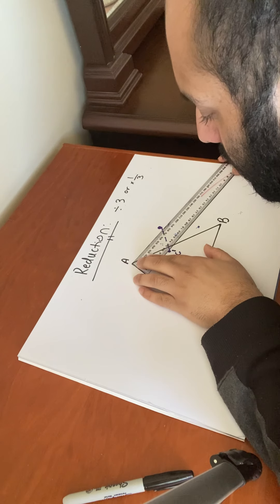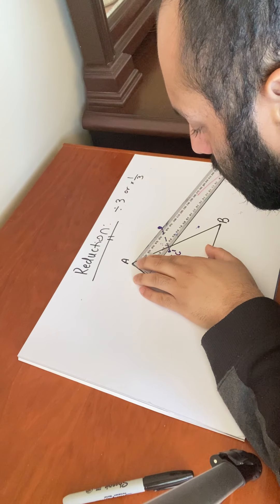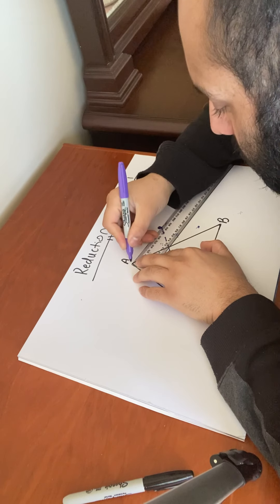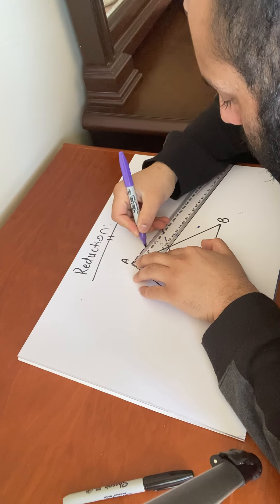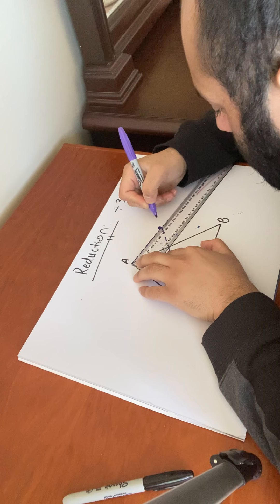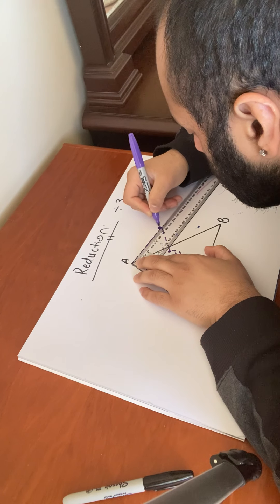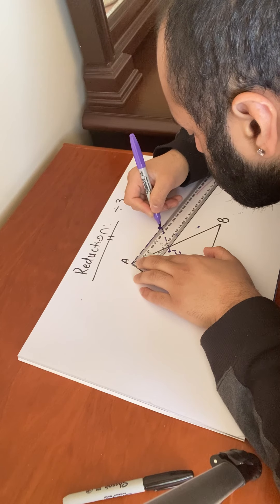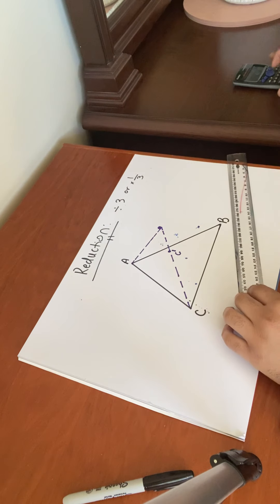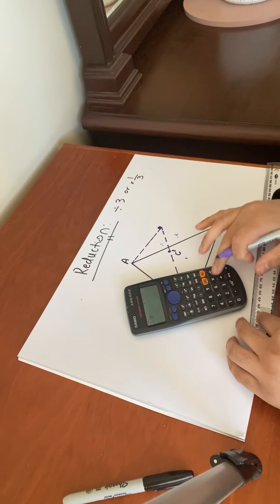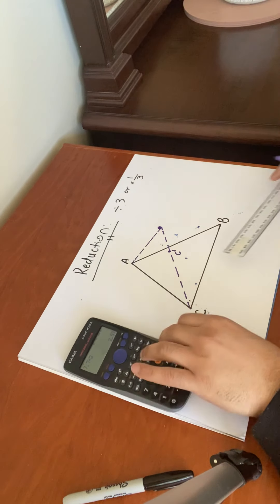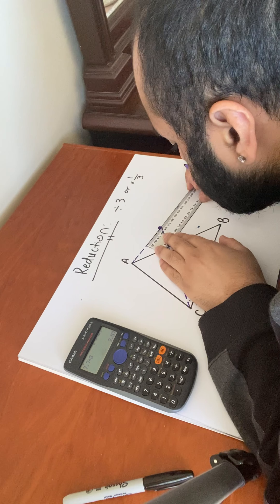Okay, now I'll do the same thing for A. A is up here. Rough estimate we're getting, that's about, say, 7.7 centimeters. 7.7 centimeters divide that by three should get 2.57. So we're going to measure 2.57 from the dot.